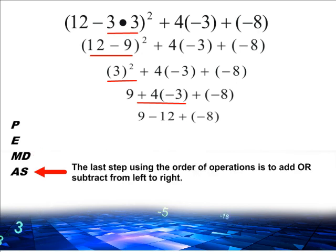At this point, all we have remaining is either addition or subtraction. When addition and subtraction is the only thing that you have remaining, simply solve in order from left to right.